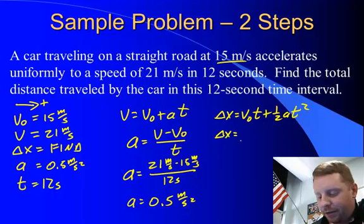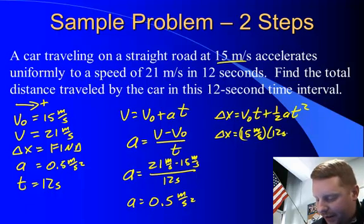Delta x then, I substitute in with units, equals v-naught 15 meters per second times t, 12 seconds, plus one-half times a, 0.5 meters per second squared,